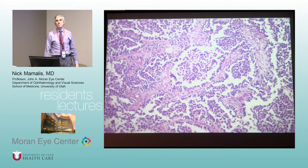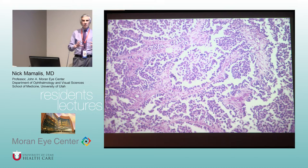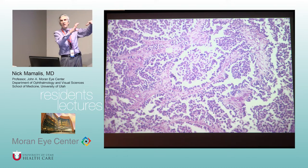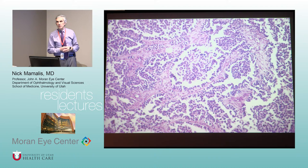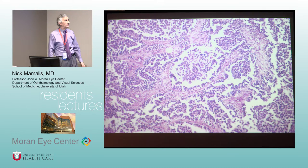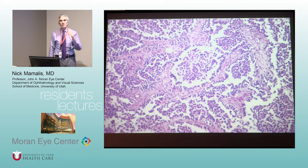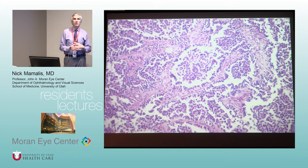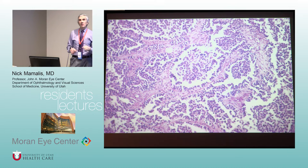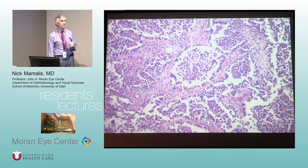The other type is alveolar rhabdomyosarcoma — it looks like lung alveoli, with little septa and round spaces containing tumor cells. This is the bad prognosis variant. Once it reaches the alveolar pattern you don't really see striations — it's poorly differentiated. Again, if you can't tell the origin, immunoperoxidase stains for desmin and muscle-specific actin confirm muscle derivation.